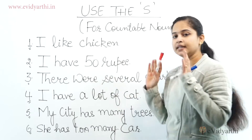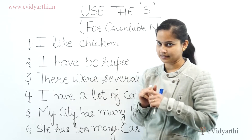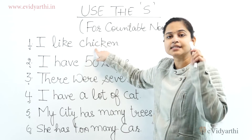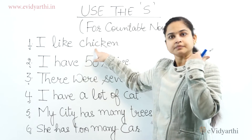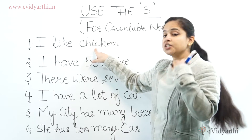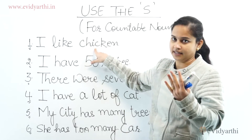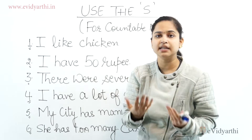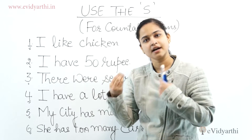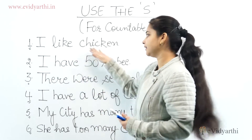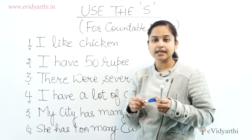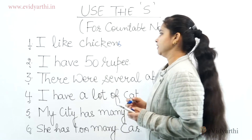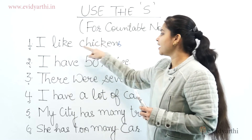I like chicken. This sentence is a correct sentence. What does this sentence mean? This sentence means that I like chicken — I want to eat chicken.